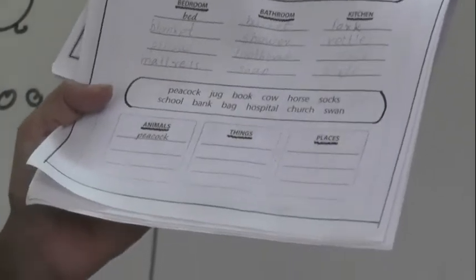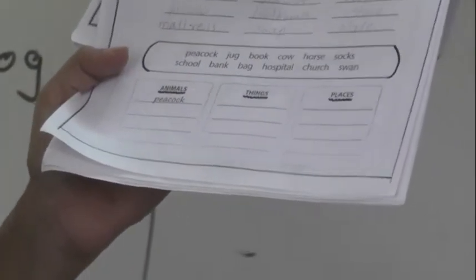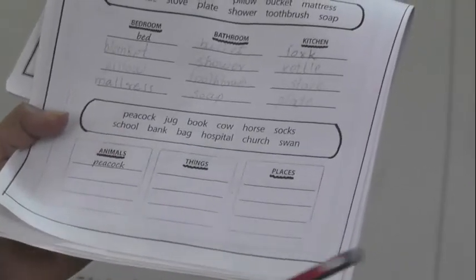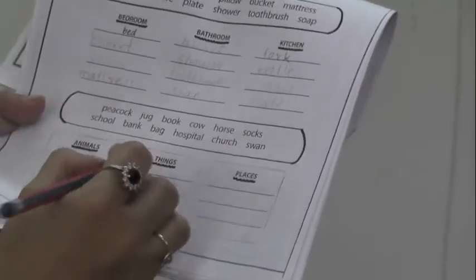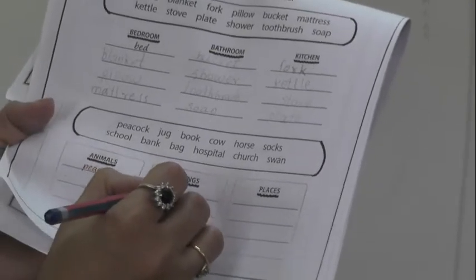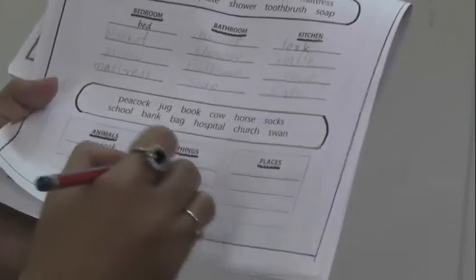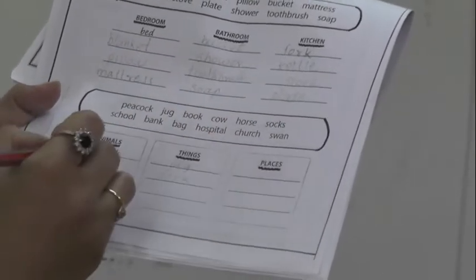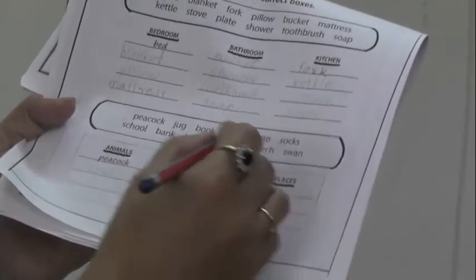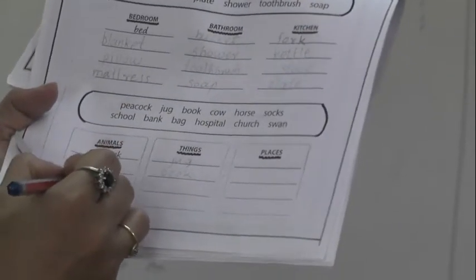Same way we are going to write about the animals, things and the places. Here are the words and these words we have to use in a correct column. Peacock is animal. It is already given here. Next is jug. Jug is thing. So, right here jug. Then book is also thing. Cow is animal. So, right in a cow in animals column.